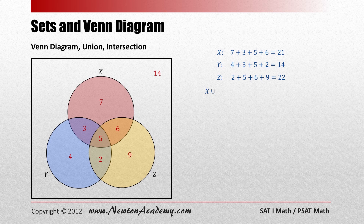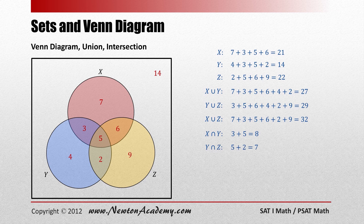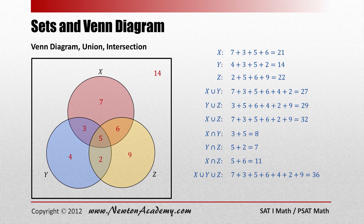X∪Y is everything inside the red and blue circles, so 27 students. You can do the same for Y∪Z and X∪Z. X∩Y is the overlapping area between the red and blue circles, so 8 students. You can do the same for Y∩Z and X∩Z. X∪Y∪Z is the total number of students within all three circles, so 36 students.